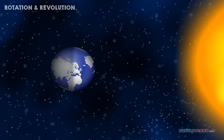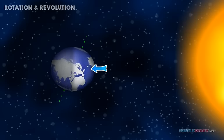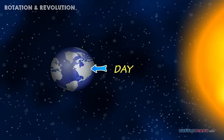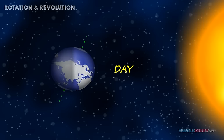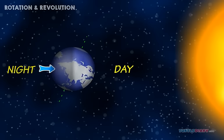When we're facing the Sun, we have light. We call it day. When we face away from the Sun, we don't have the Sun's light. We call it night.